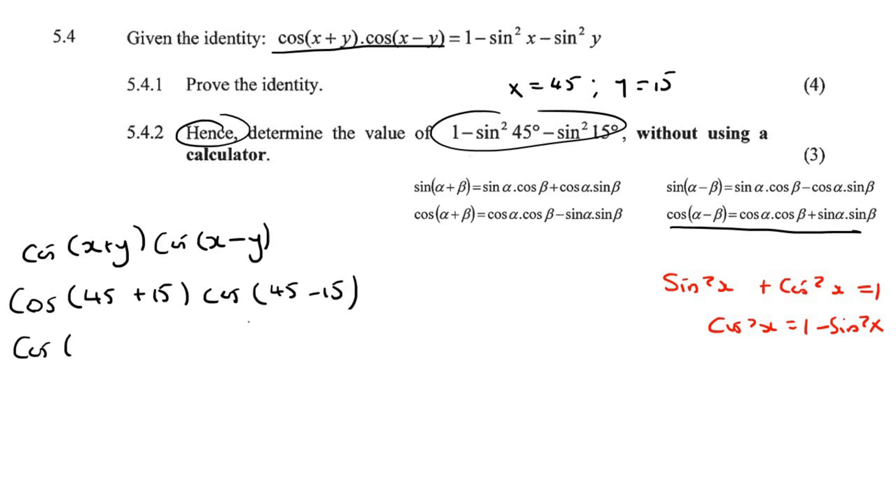That then becomes cos 60 and cos 30. So we know that these are special angles. So we've got our special triangles. I'm only going to do the 30, 60, 1, 2, square root 3.